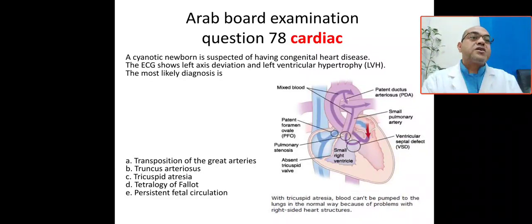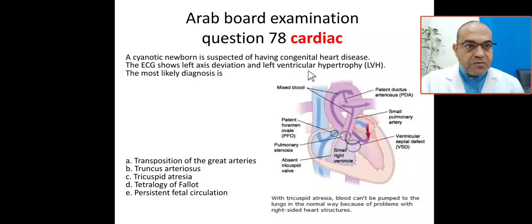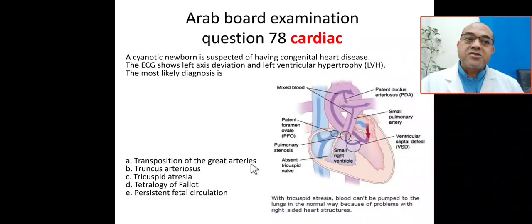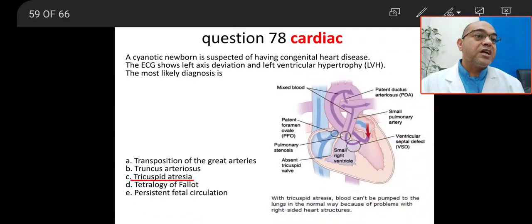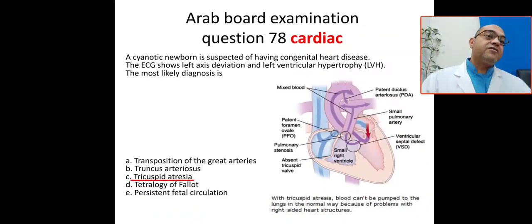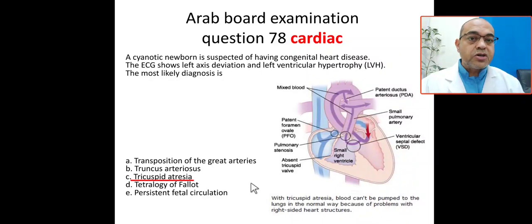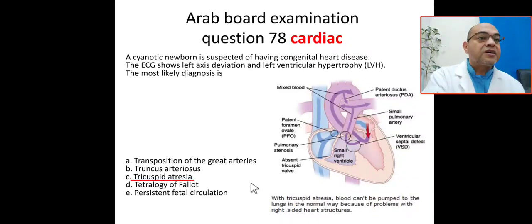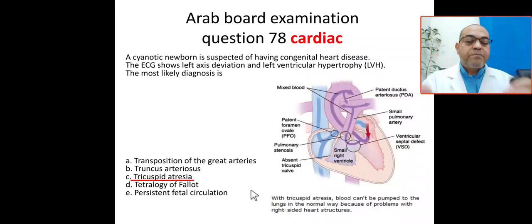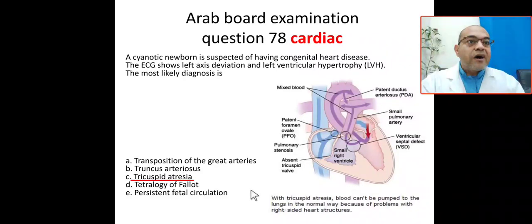The clue in this question is: cyanosis with left axis deviation and left ventricular hypertrophy equals tricuspid atresia. Looking at the choices: TGA is not the case, Truncus arteriosus is not the case — tricuspid atresia is the answer. In tricuspid atresia the right ventricle is hypoplastic, which is the opposite of Tetralogy of Fallot where there is enlarged right ventricular pressure.